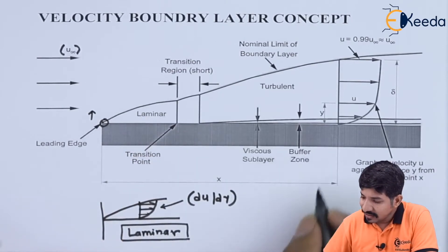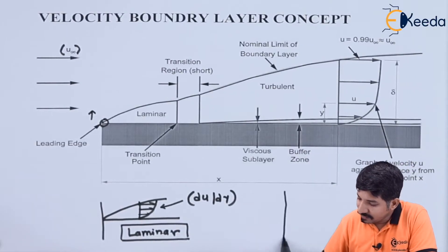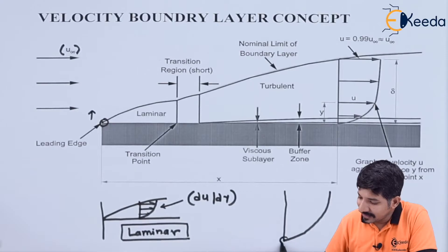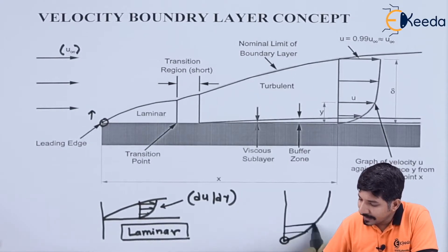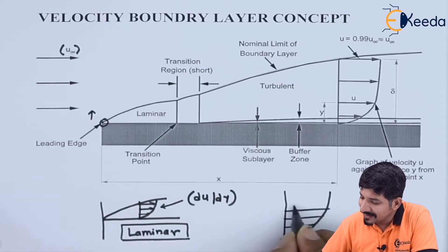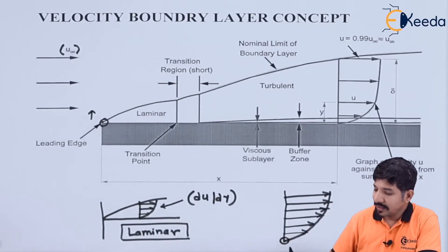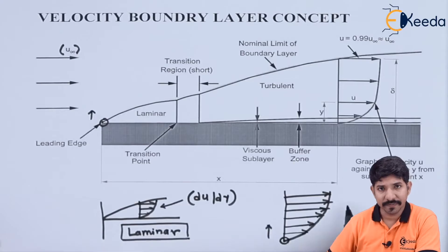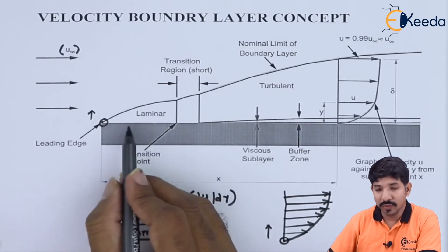Correspondingly, the velocity of the adjacent particle in the upward direction will start retarding. We can draw a simple diagram and indicate that the velocity near the leading edge is zero, and then as we go to the upper layer the velocity will keep on increasing. This is due to the no-slip condition that exists in fluid dynamics.